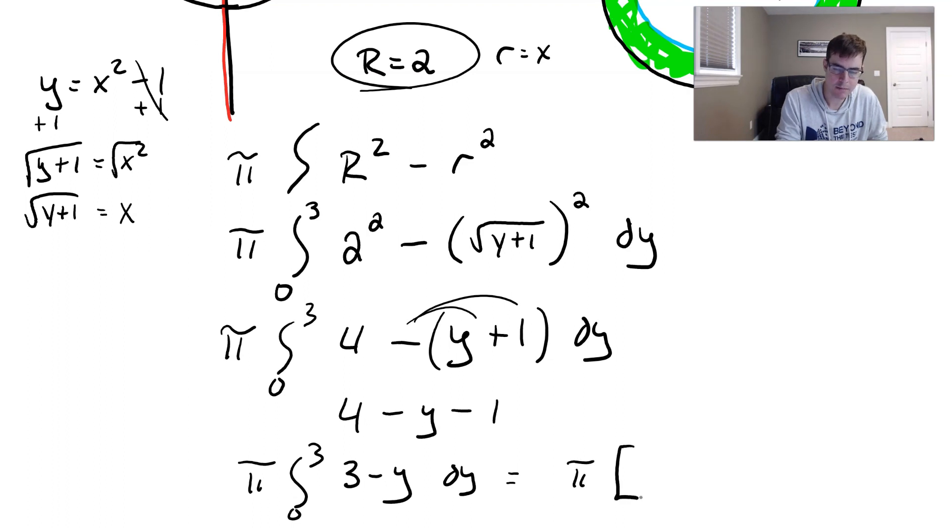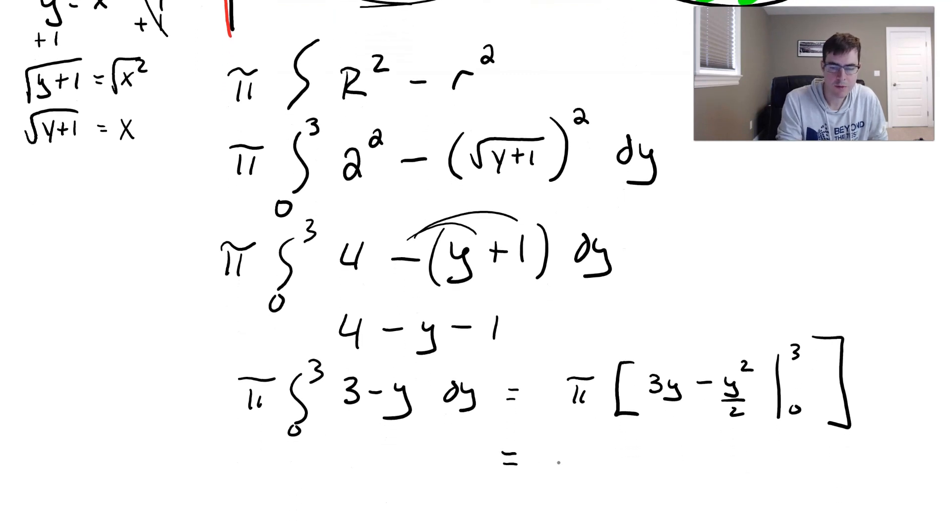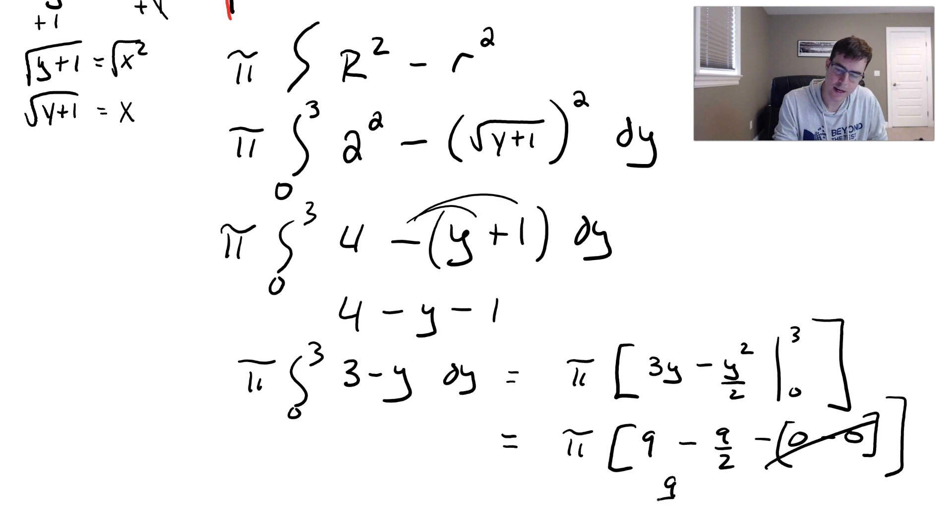And now we're taking the integral of that from zero to three here. And we could do this out. That then becomes pi times. And then we can go ahead and integrate. Three becomes three Y. Y becomes Y squared over two. And now we're going to do that from zero to three. So if we do that out here, three times three is nine. Three squared is nine. Nine over two. And then if you put in zero, that would just be zero minus zero. So that part's just going to disappear here. So nine minus 4.5 is just 4.5, which is nine over two. So this would be nine pi over two. And that would be our answer. And that's it.